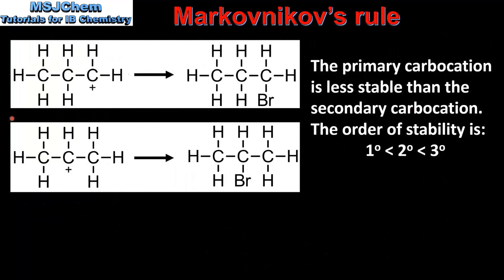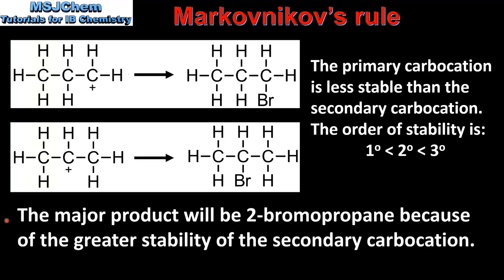The major product depends on the stability of the carbocation formed in the reaction. If the major product is 1-bromopropane, this involves the formation of a primary carbocation. If the major product is 2-bromopropane, this involves the formation of a secondary carbocation. The primary carbocation is less stable than the secondary carbocation. The order of stability is: primary carbocations are the least stable and tertiary carbocations are the most stable. So the major product will be 2-bromopropane because of the greater stability of the secondary carbocation.